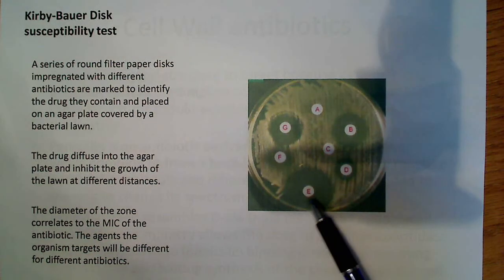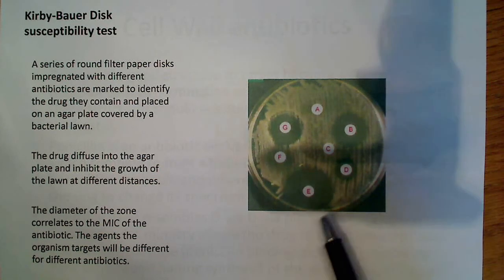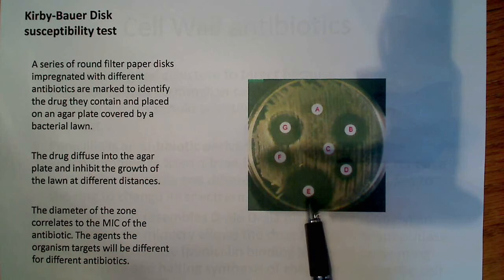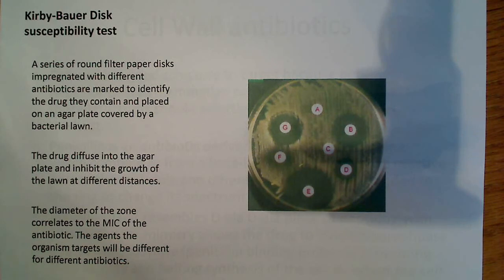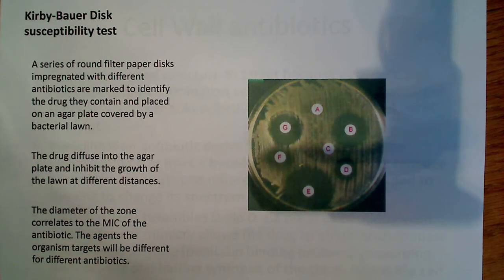When the drugs diffuse into the agar plate, they inhibit the growth of the lawn at different distances. You can take a ruler and measure in centimeters or millimeters to determine what the zone of clearing is — essentially the diameter. The diameter of the zone correlates to the minimum inhibitory concentration of the antibiotic. It's quite intuitive: the larger the zone of clearing, the better the antibiotic is at inhibiting that particular bacterial growth — gram-negative, gram-positive, or a specific bacterium.